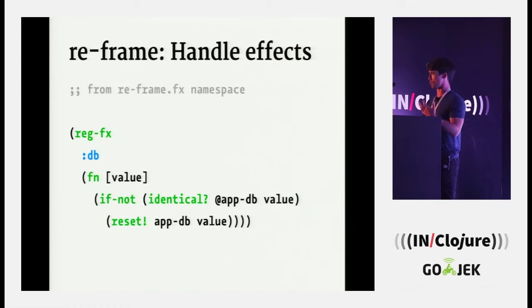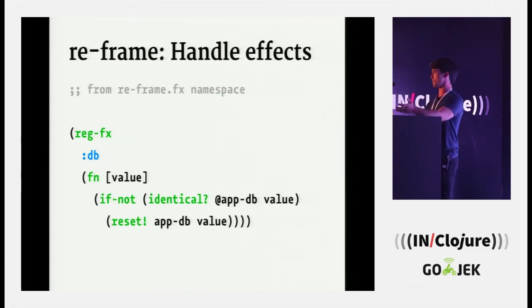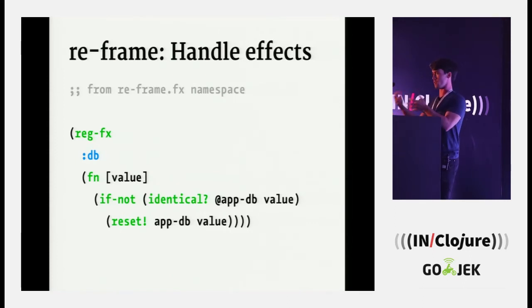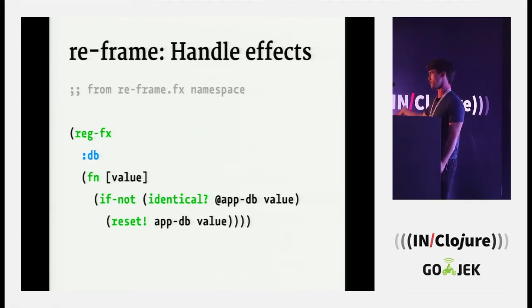Event handlers output effects. You also need to handle those effects. This is mostly done for you — someone would have built a library to do an HTTP call, for example. Here's the effect handler that modifies the database. This is reg-fx — you give it the name, the effect type, and a function. That function takes the effect, does your mutation, your HTTP call, whatever side effect you need. This is where you keep the harder-to-reason-about, harder-to-test code. The database one is dead simple: if it's different, reset it.